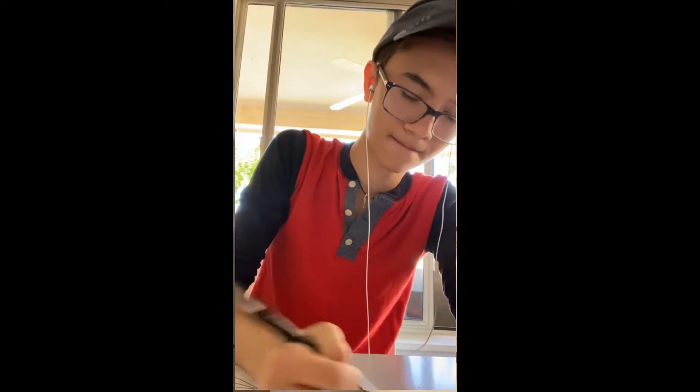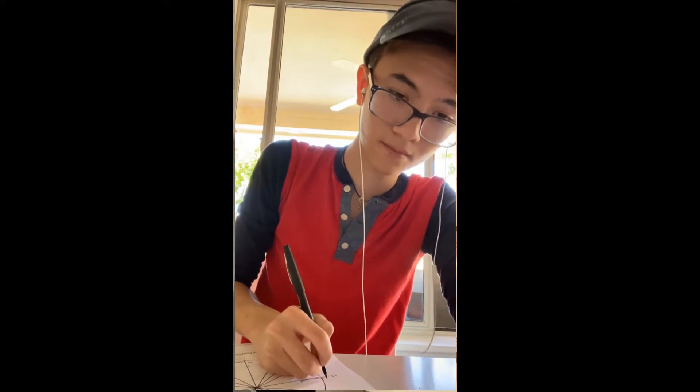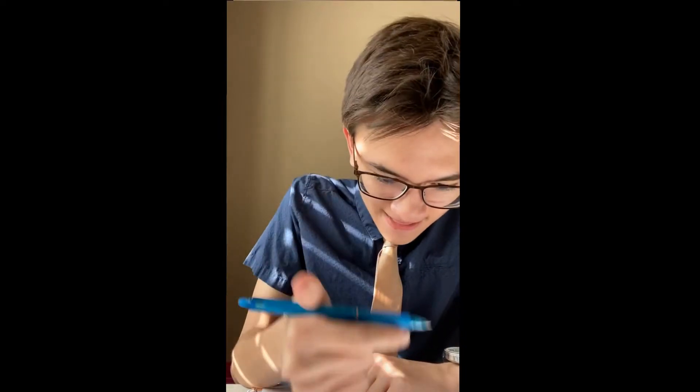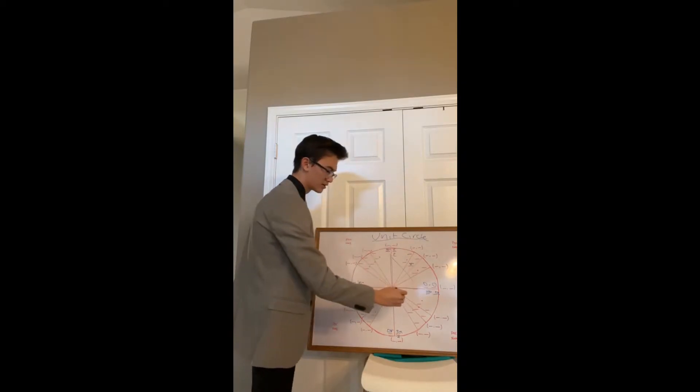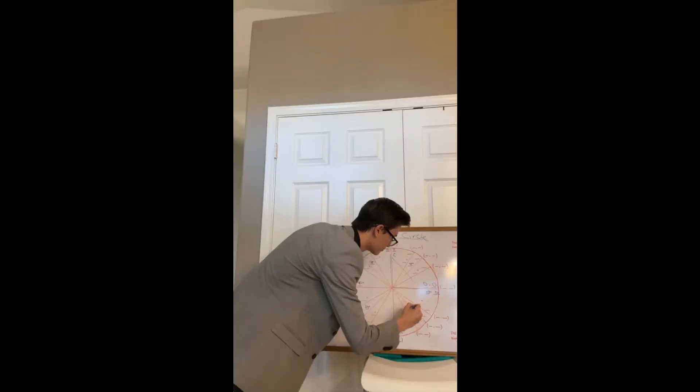Right here we have 45 degrees, because it's right between 90 and zero. Think of these as triangles — we've got triangles everywhere, so many triangles. And right here this one is 315 degrees.